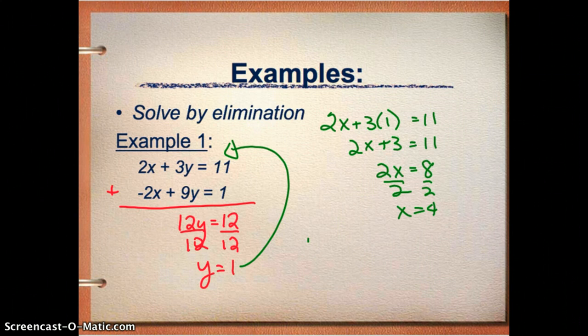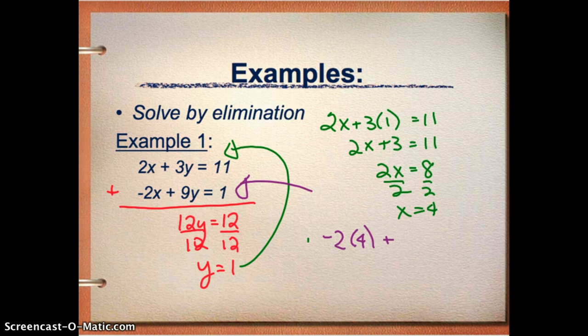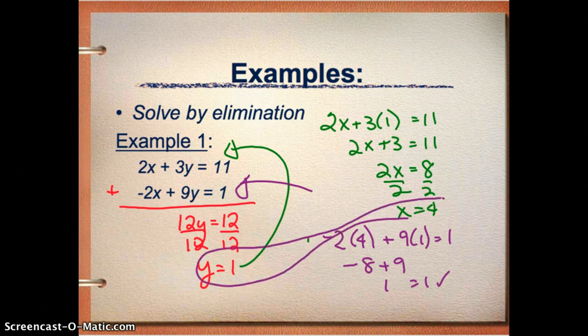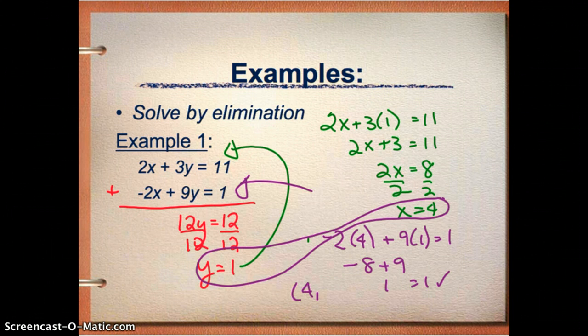So I think that at y equals 1 and x equals 4, I'm going to check in this second equation to see if I'm right. So I want to know if negative 2 times 4 plus 9 times 1 really does equal 1. And that's negative 8 plus 9. That really is 1, so I'm good to go. And I've gotten my answer right. x equals 4 and y equals 1.